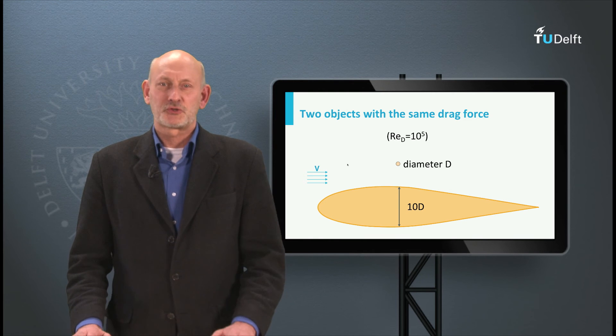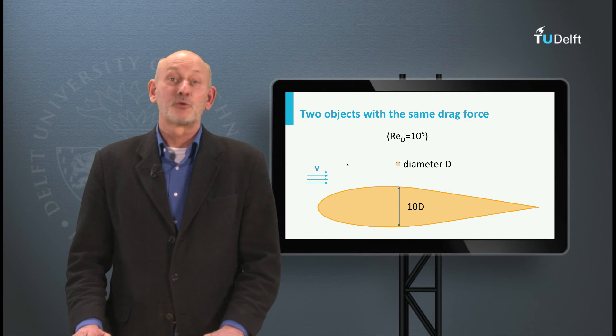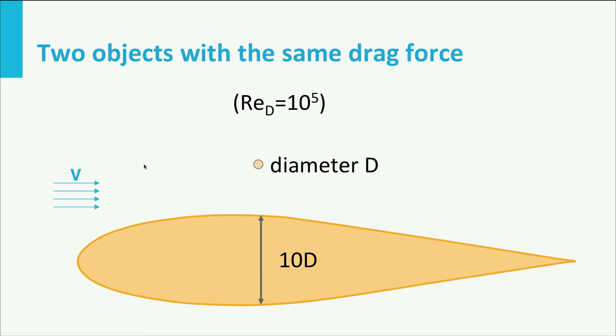As you have noticed, a circle is a bad aerodynamic shape. This picture speaks for itself actually. The airfoil can be made 10 times thicker than the cylinder and still experiences the same drag force. This also shows the importance of streamlining.